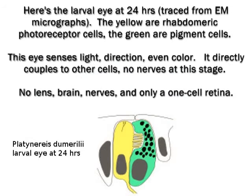Here's the larval eye at 24 hours, traced from EM micrographs. The yellow are rhabdomeric photoreceptor cells. The green are pigment cells. These two cells are the simplest possible visual system.